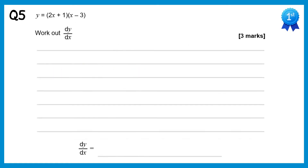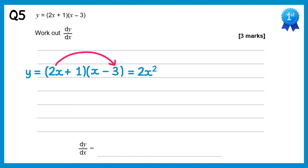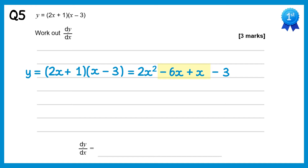For this question we need to expand the brackets first: 2x plus 1 times x minus 3. 2x times x is 2x squared; 2x times negative 3 is negative 6x; 1 times x is x and 1 times negative 3 is negative 3. Simplifying the middle terms gives y equals 2x squared take 5x take 3. Now we differentiate: power 2 times coefficient 2 gives 4, reduce power to 1, so 4x. The next term is negative 5x so we lose the x giving negative 5, and the constant negative 3 differentiates to 0, so we're done.